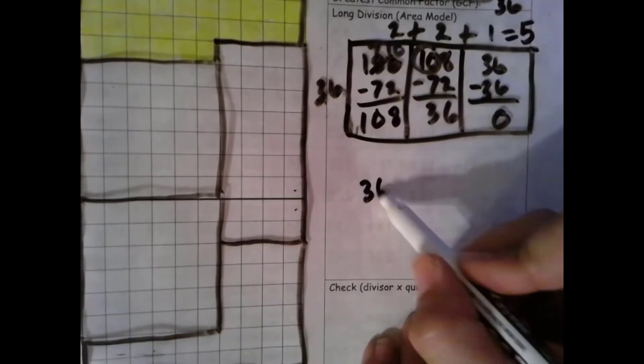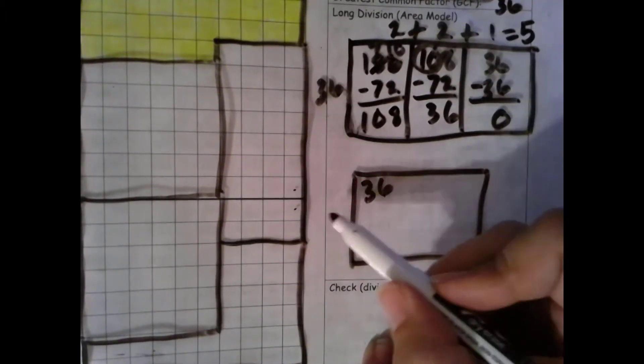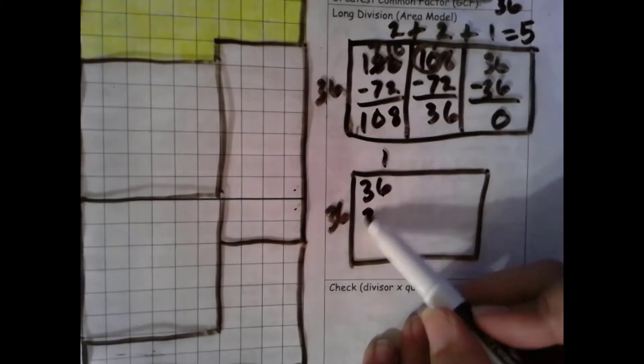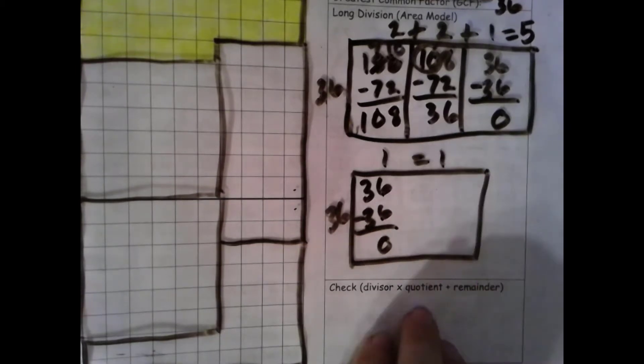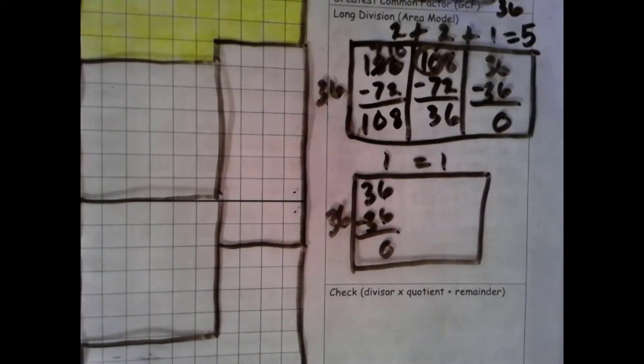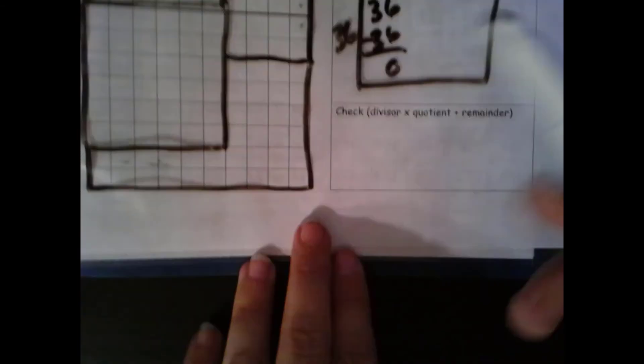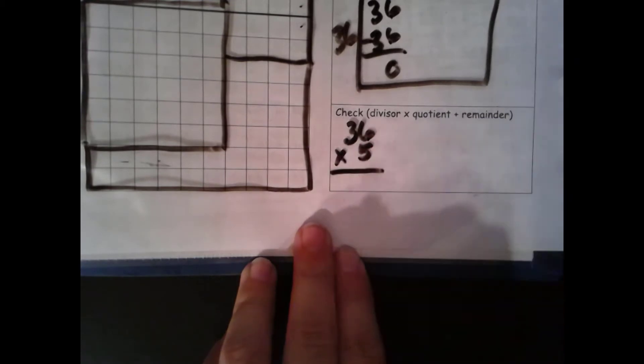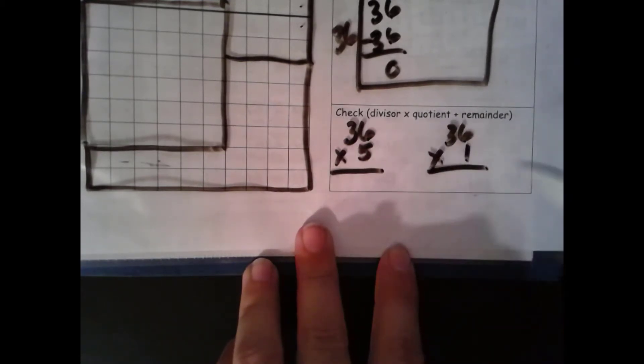Now our numerator. 36 times 1 is 36. Number is the same. Zero is the game. So we just get 1 for that. Now we still want to check divisor times quotient plus remainder. Divisor times quotient plus remainder. Since our remainder is 0 for both and the identity property of addition says it's going to stay the same, we don't actually need to add the 0.